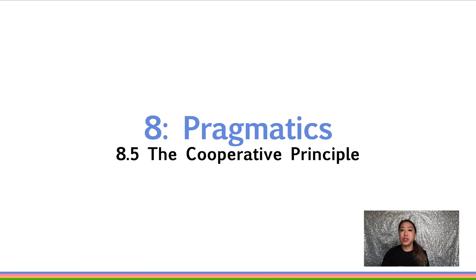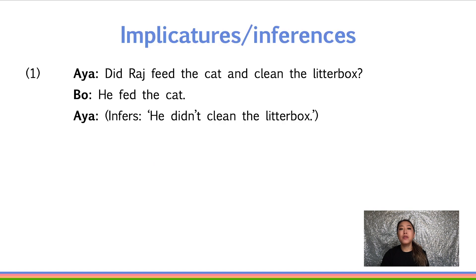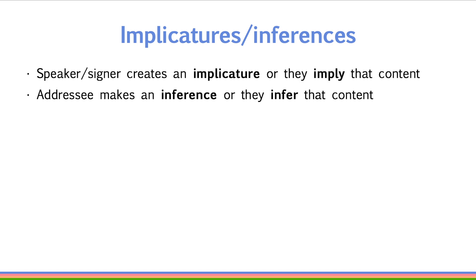In this section, we will discuss the conversational logic behind why certain implicatures arise in discourse. Let's start with the following example in one. Did Raj feed the cat and clean the litter box? He fed the cat. Aya infers he didn't clean the litter box. Terminologically, the speaker-signer creates an implicature, or they imply that content.